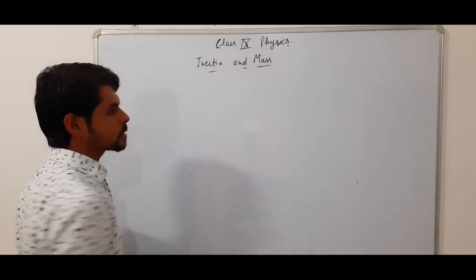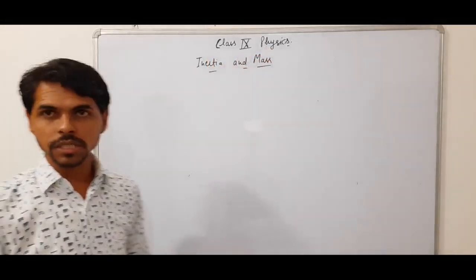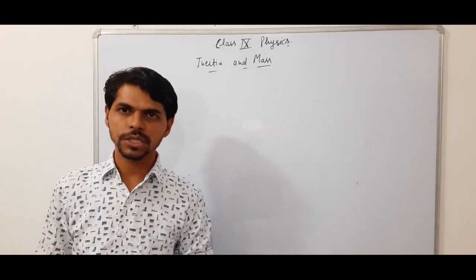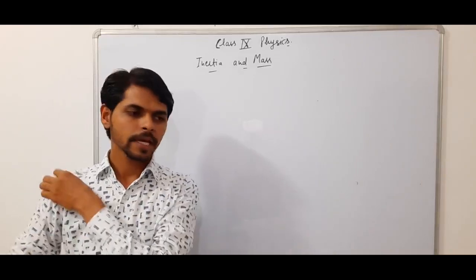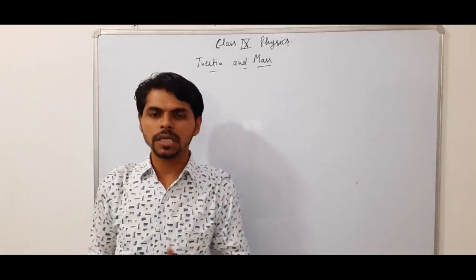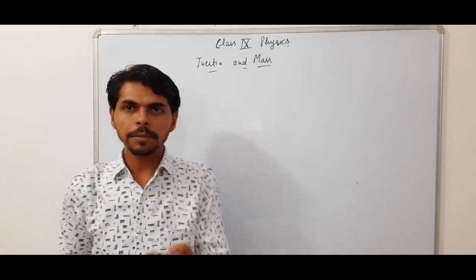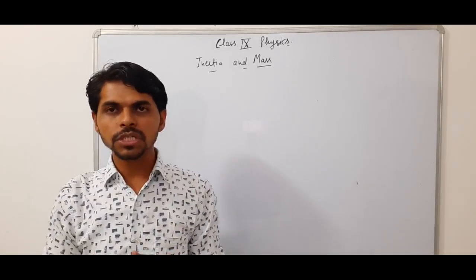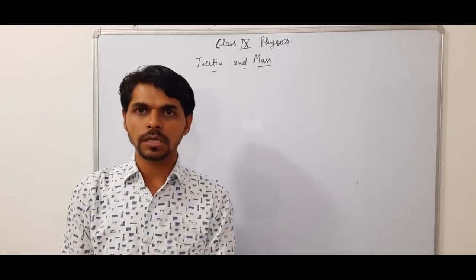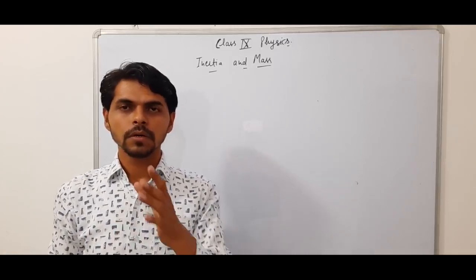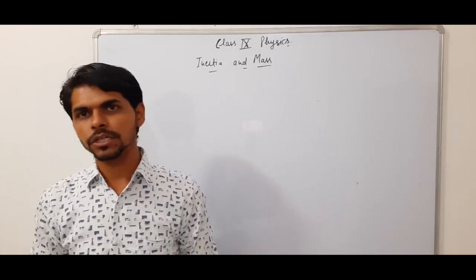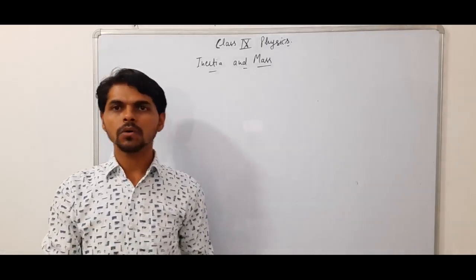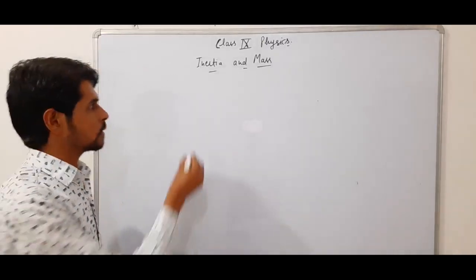What is inertia's relation to mass? Inertia aur mass mein kya relation hai? Basically, inertia yeh hai ki koi bhi body apni position change nahi karna chahti — uska virodh karti hai. Woh uski property inertia hai. Jis body ka mass zyada hoga, uska inertia bhi zyada hoga.